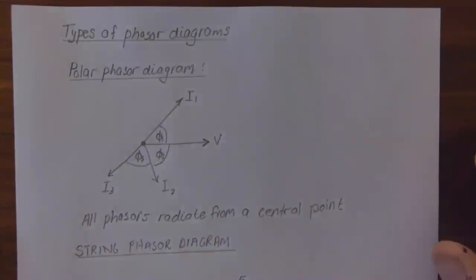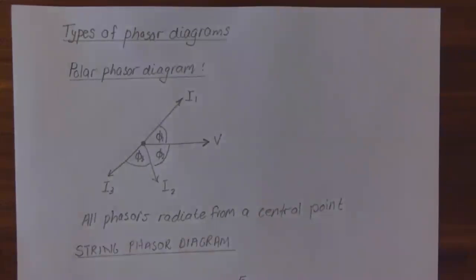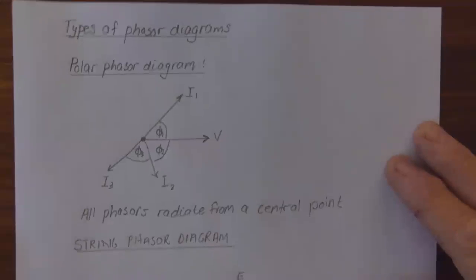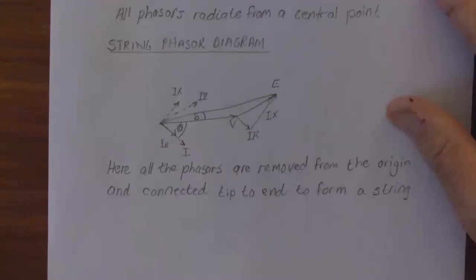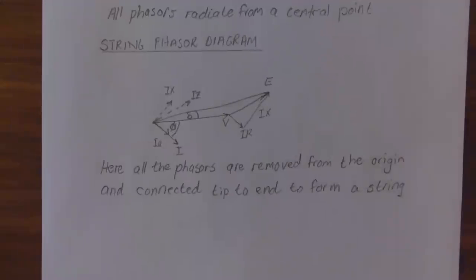There are basically two types of phasor diagrams that we are going to consider. The first one is the polar phasor diagram, where all the phasors radiate from a central point, which is not a really good thing. The phasor diagram that we normally use is the string phasor diagram, where all the phasors are removed from the origin and connected tip to toe to form a string.